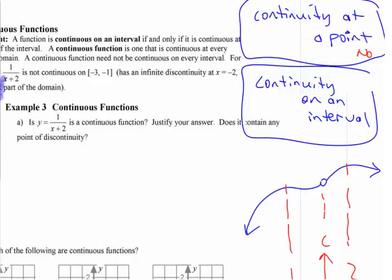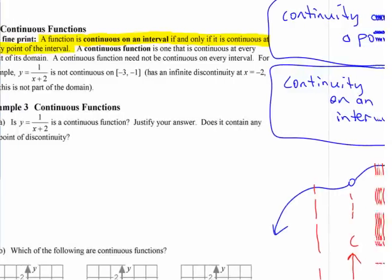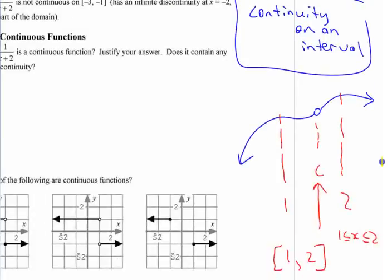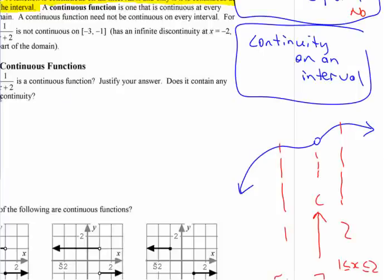It says a function is continuous on an interval if and only if it is continuous at every point on the interval. Is it continuous at every point on that interval? No. There's a place—we already said there's one place where it's discontinuous. So it is not continuous on that interval.